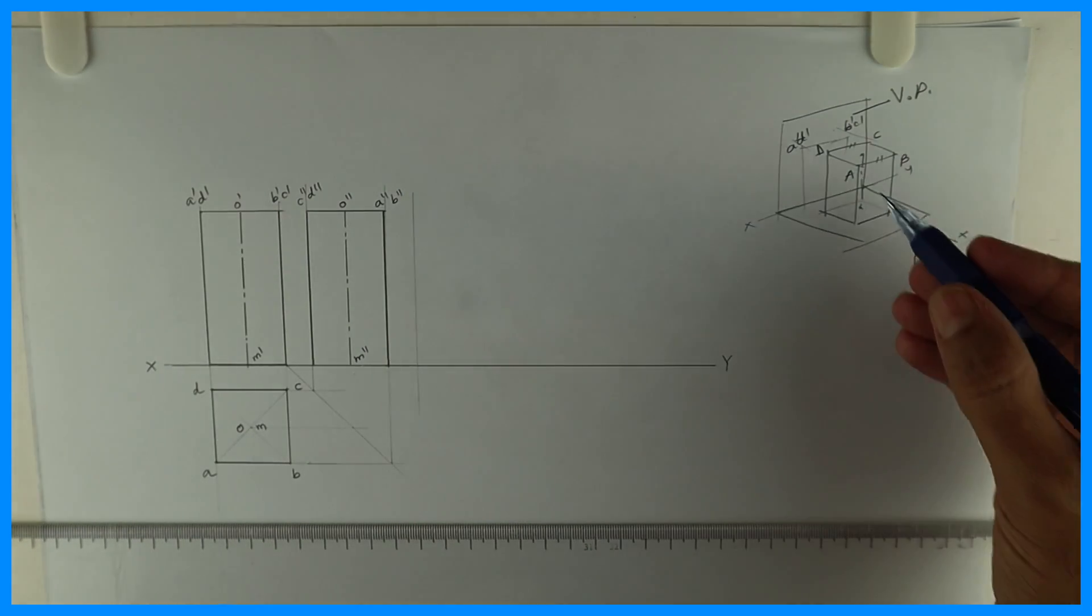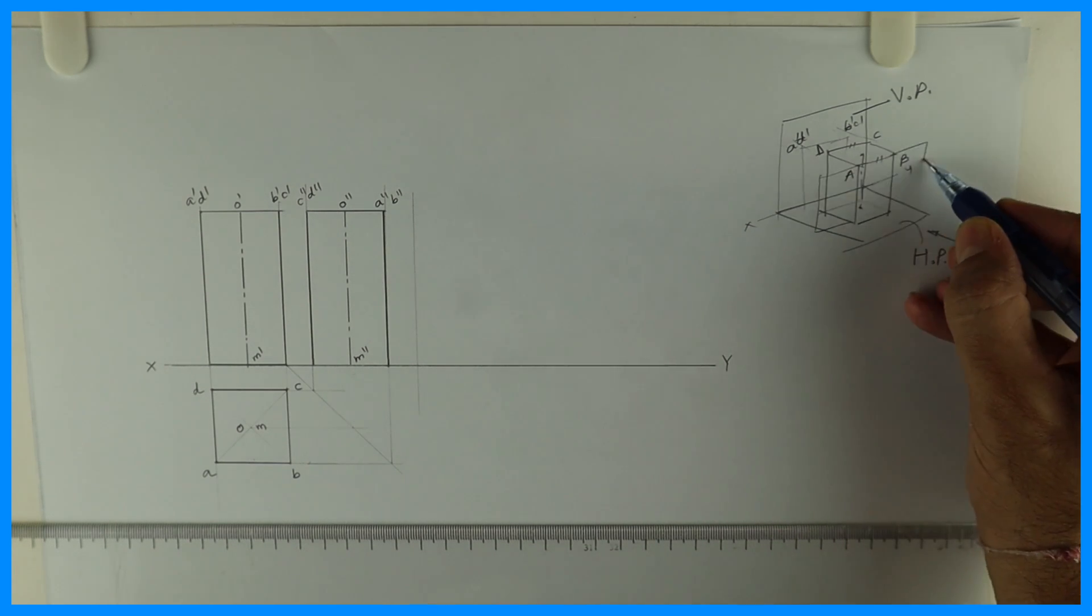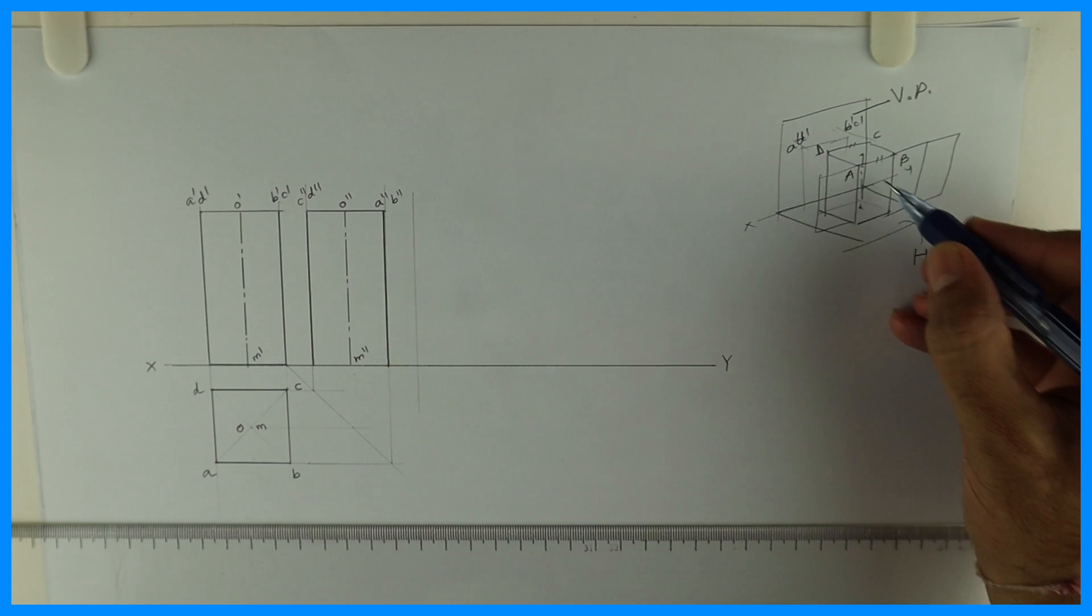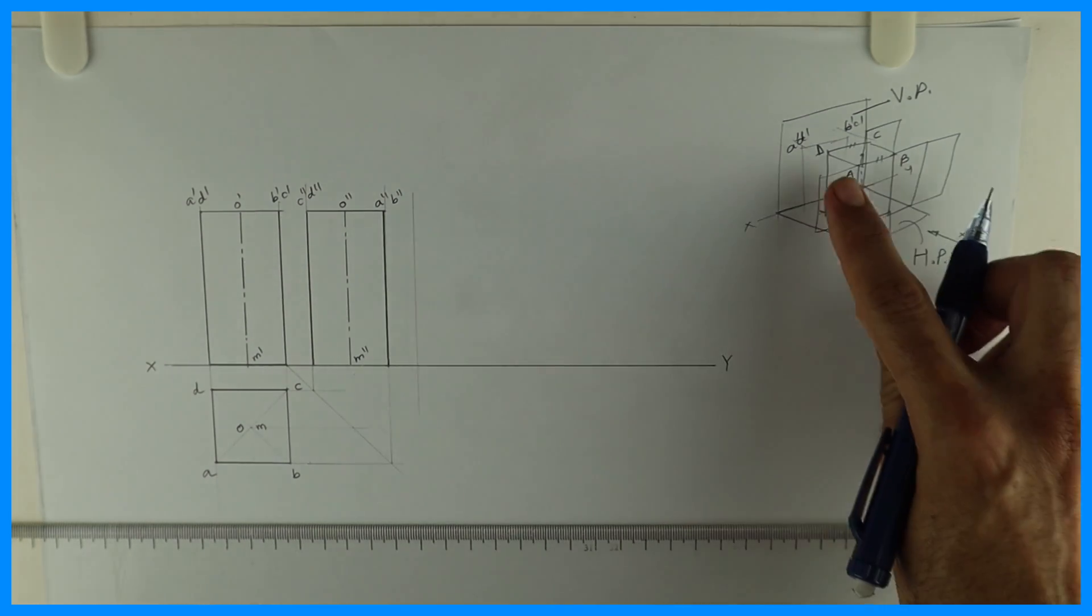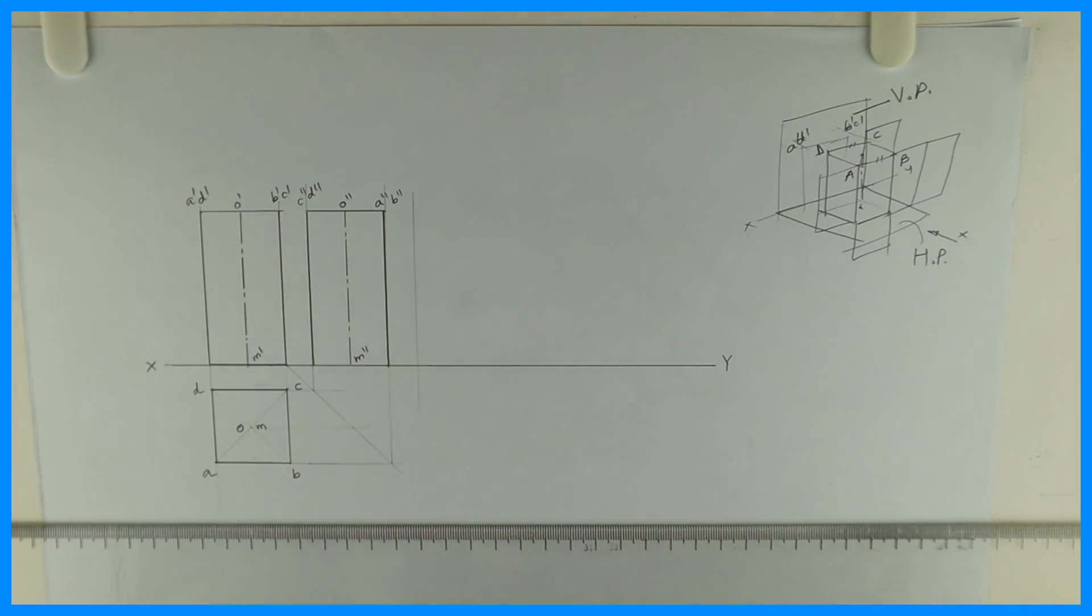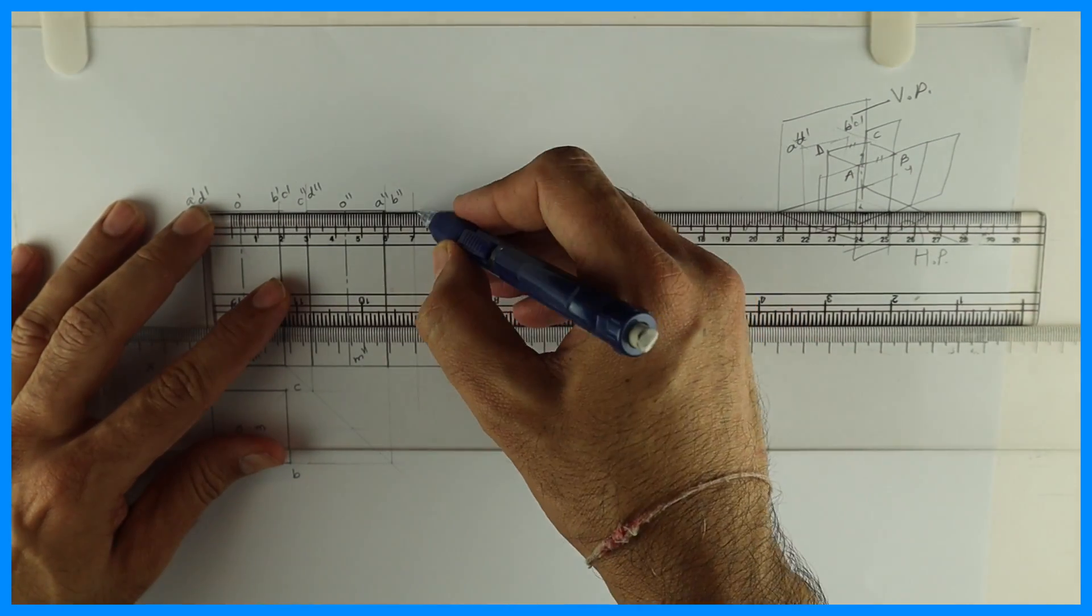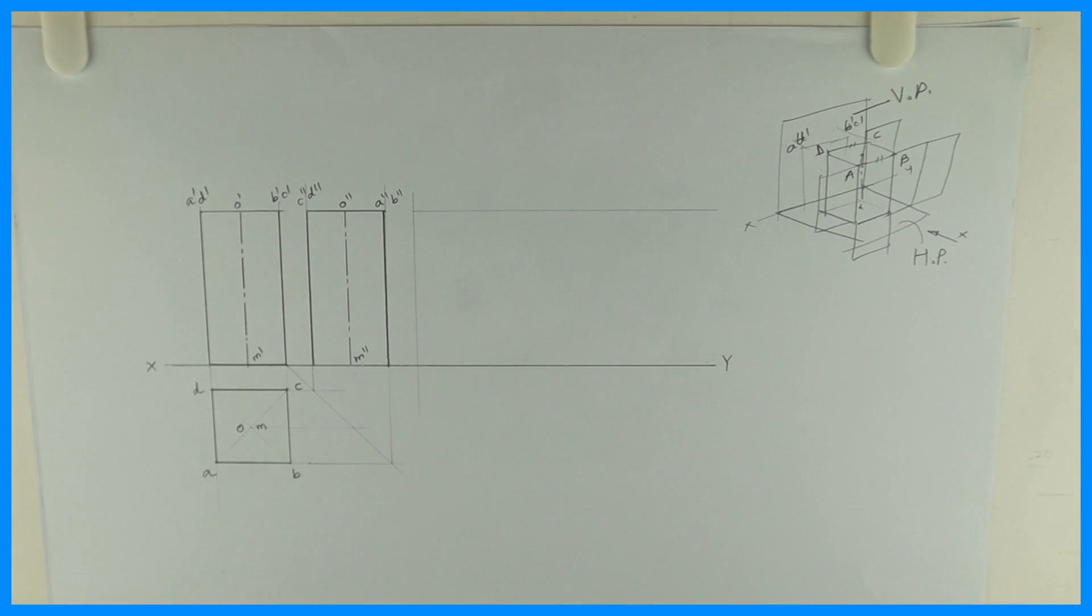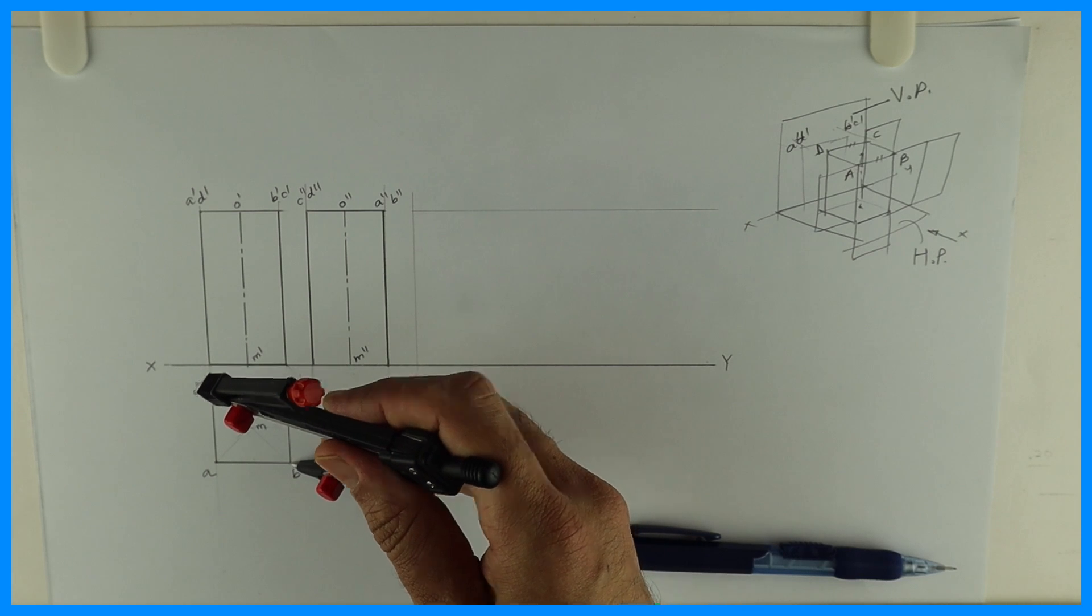Now I'll draw development. What do you mean by development? When you open it, how it will look? Let's say if you open this prism, this is how it will appear. So this is called total development with the flap. And if you draw without the top and bottom square, then it is called lateral surface development.